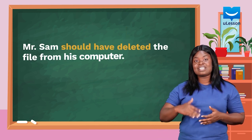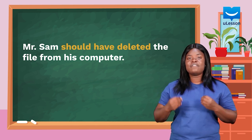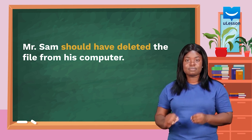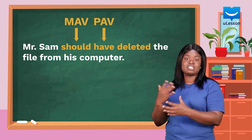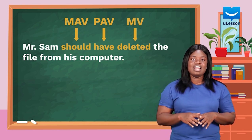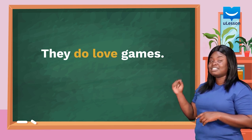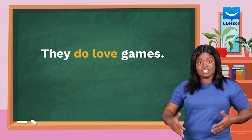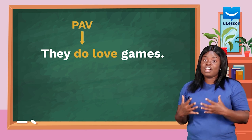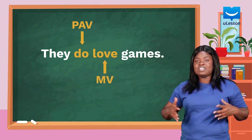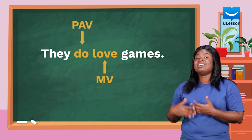The king might reward that key. The verb phrase is 'might reward' — 'might' is a modal auxiliary verb and 'reward' is the main verb. In the sentence 'Mr. Sam should have deleted the file from his computer', the verb phrase is 'should have deleted'. 'Should' is a modal auxiliary verb, 'have' is a primary auxiliary verb, and 'deleted' is the main verb. Now in 'they do love games', 'do love' is the verb phrase. 'Do' is a primary auxiliary verb and 'love' is the main verb. The essence of 'do' here is just for emphasis, because the sentence means the same as 'they love games'.